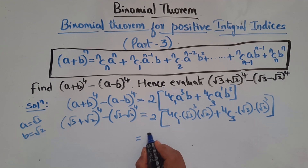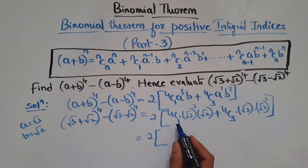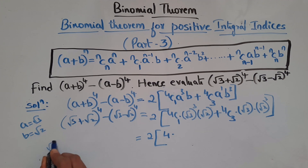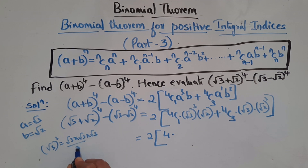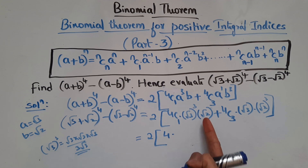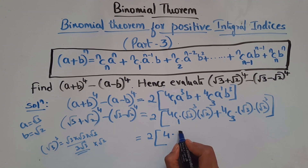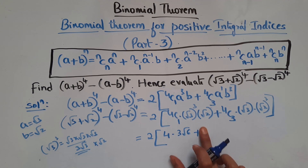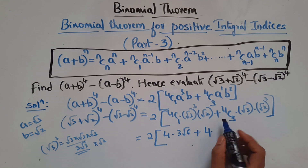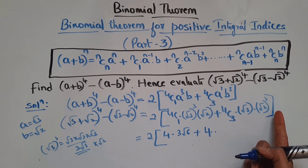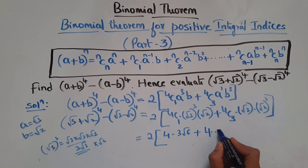This equals 2 times: 4C1 is 4. Now (√3)³ = √3·√3·√3 = 3√3, so 4C1·(√3)³·√2 = 4·3√3·√2 = 12·√6. Then 4C3 is 4, and (√2)³ = 2√2, so 4C3·√3·(√2)³ = 4·√3·2√2 = 8√6.